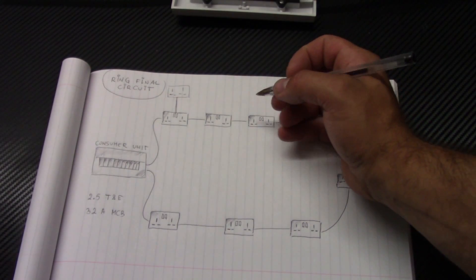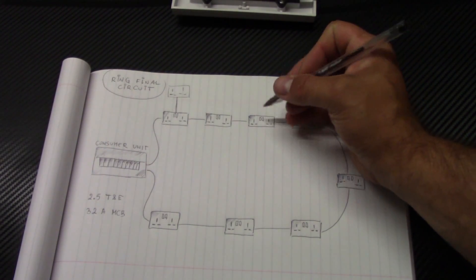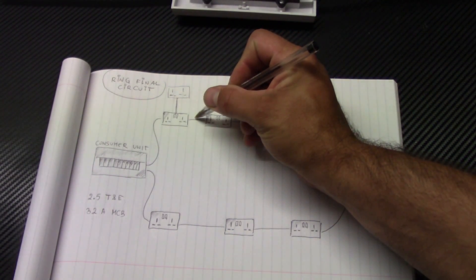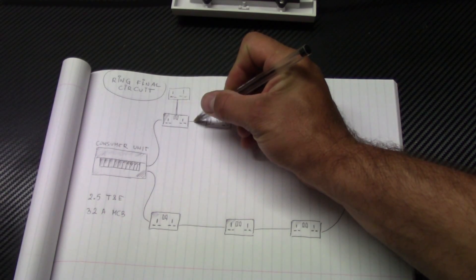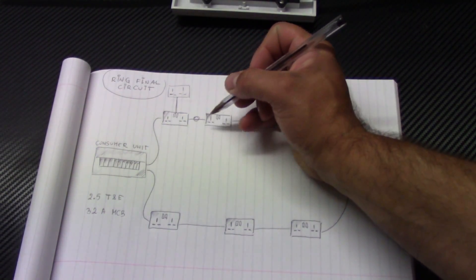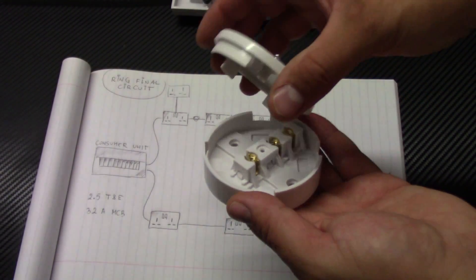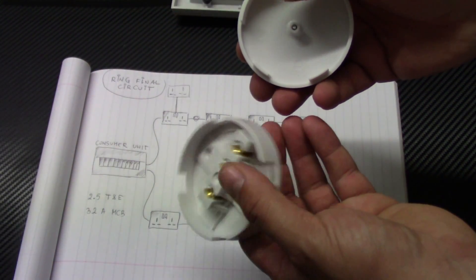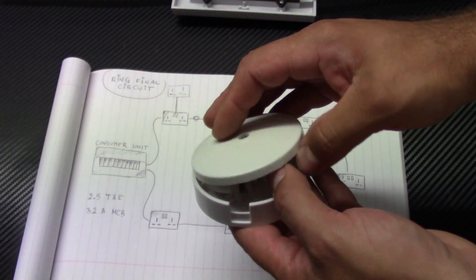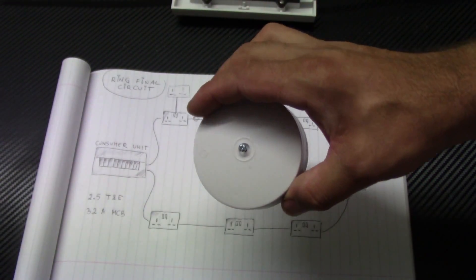There is also another way of making a spare from the ring circuit. We can make a junction box in between two sockets on a ring. The junction box has to be 30A with three terminals. I'll show you in a minute how to fix it.